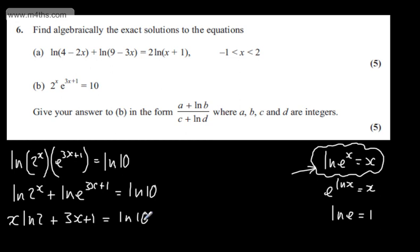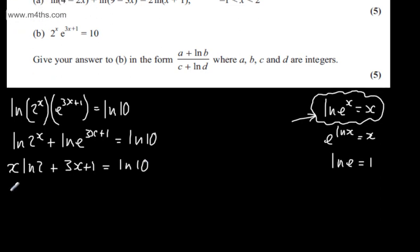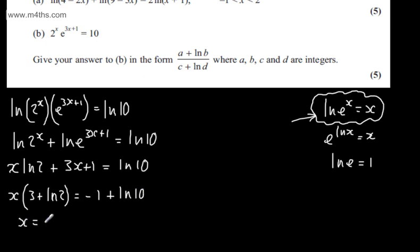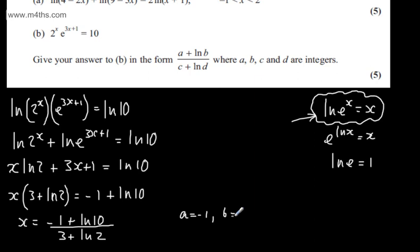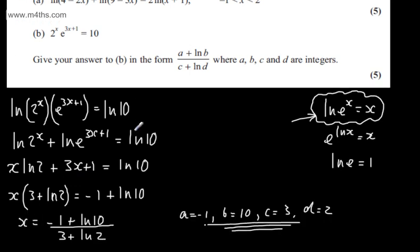Factoring out x: x times (3 plus ln 2) plus 1 equals ln(10). Subtracting 1 from both sides gives x(3 plus ln 2) equals minus 1 plus ln(10). Dividing through by the bracket: x equals (minus 1 plus ln 10) divided by (3 plus ln 2). So A equals minus 1, B equals 10, C equals 3, and D equals 2. This is the exact solution, earning 5 marks.